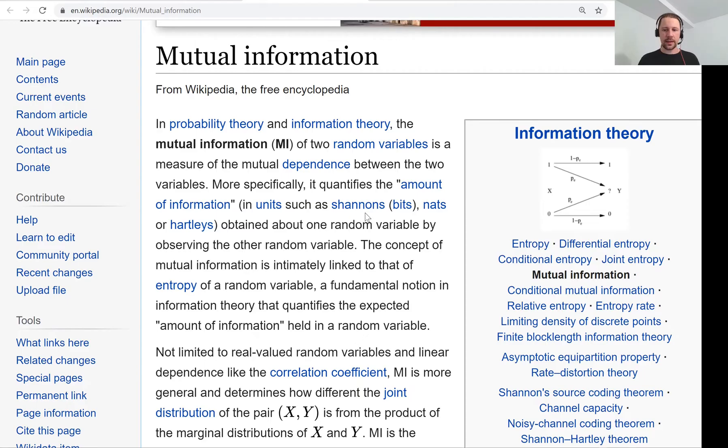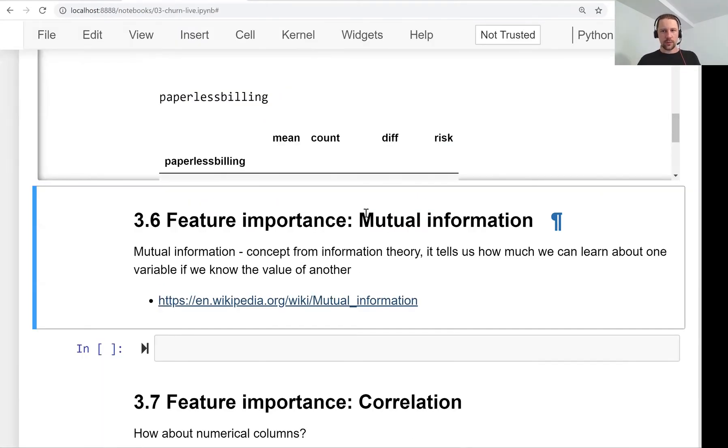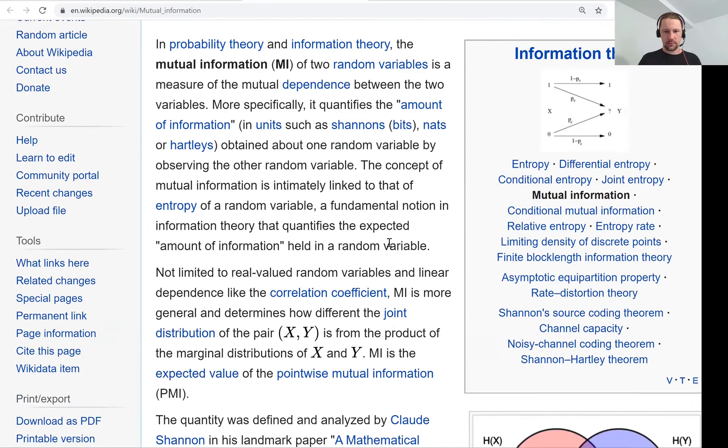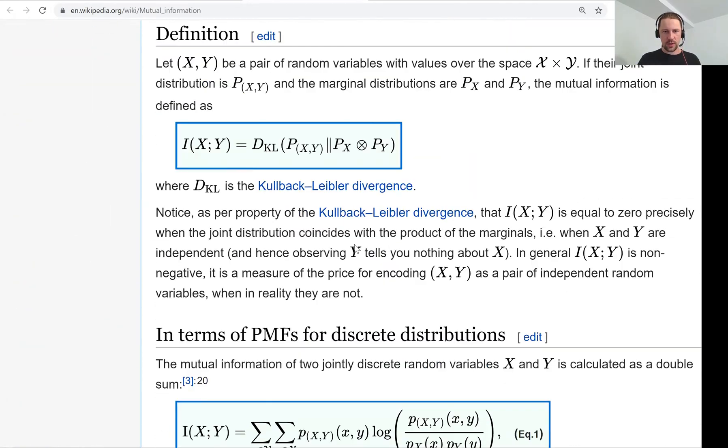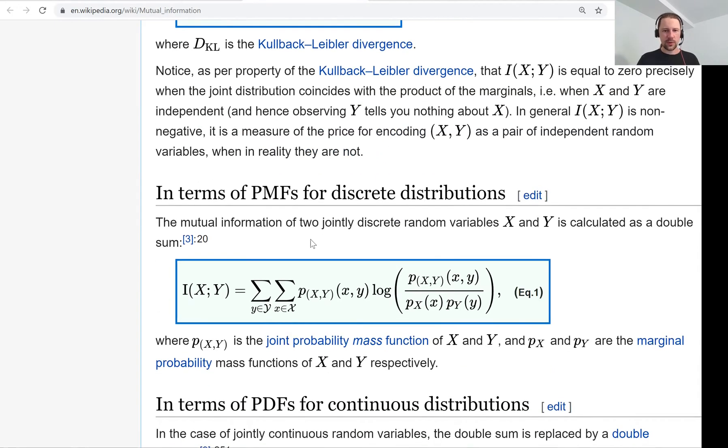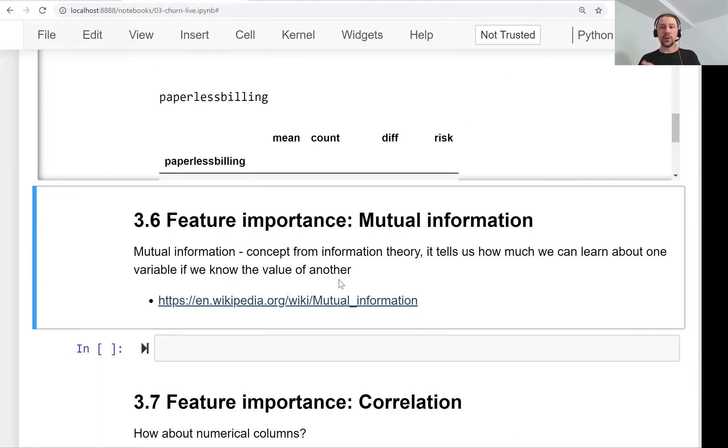This is exactly the kind of relationship we are interested in, and mutual information, which is defined with a formula that is quite complex—we will not go into details. We just need the intuition, and the intuition is: the higher mutual information is, the more we learn about churn by observing the value of another variable.